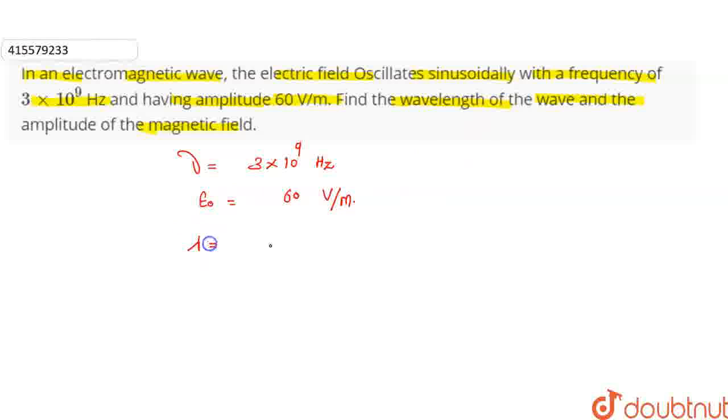We need to find the wavelength and the amplitude of the magnetic field. Now, we have a formula. We know that c = νλ, so we can easily find λ = c/ν, where c is the speed of light.